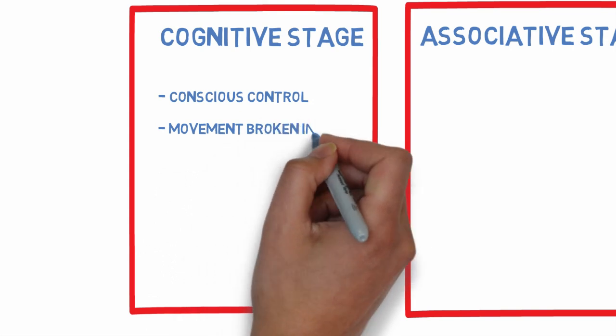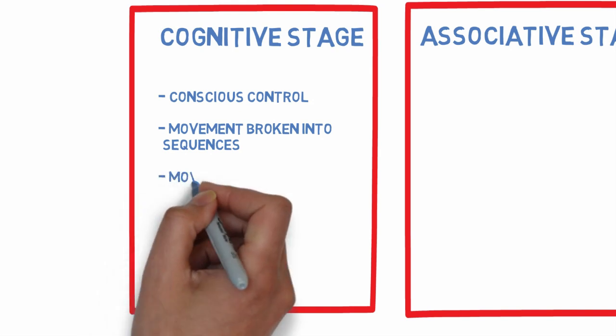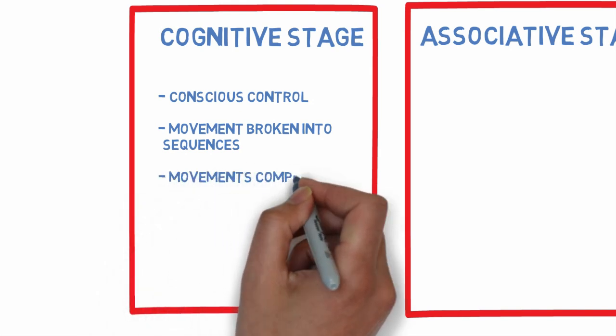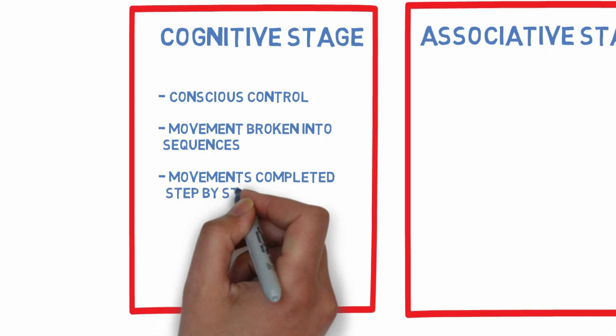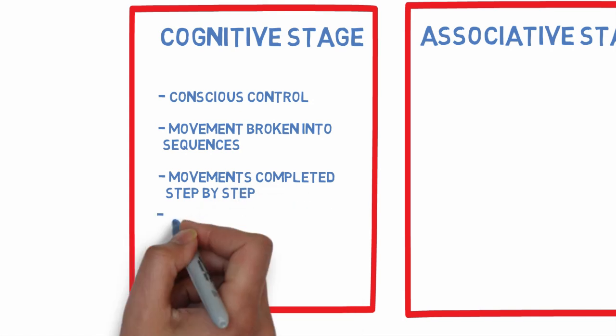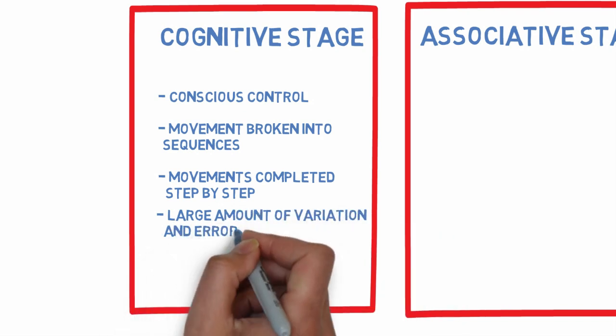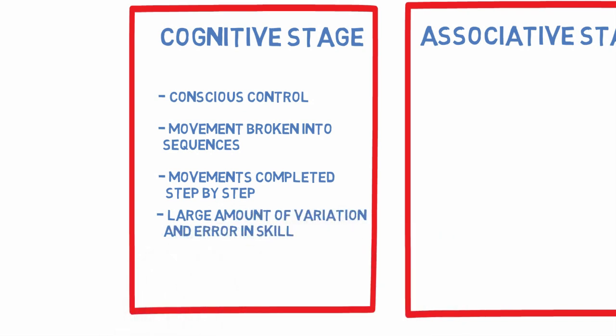While completing the movement, beginners use declarative knowledge and integrate this into their movement which is broken down into sequences. The unintegrated control structures responsible for movement are attended to in a step-by-step fashion. During this phase, there is a large amount of variance and error in skill performance.